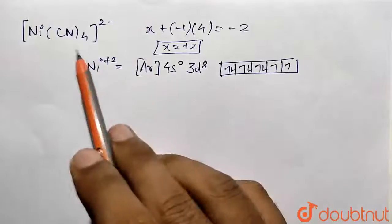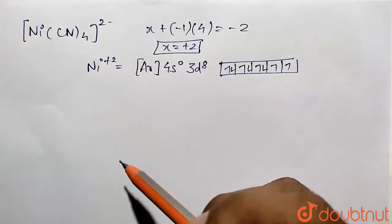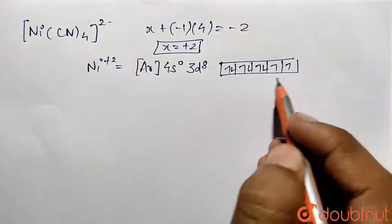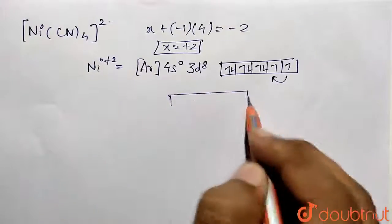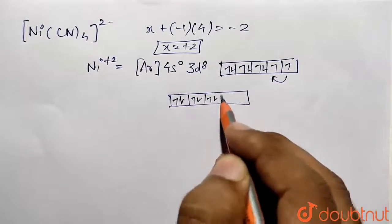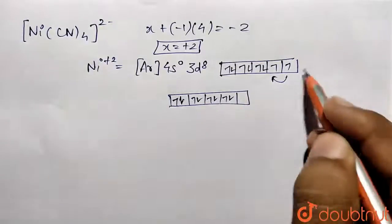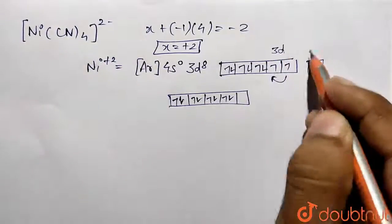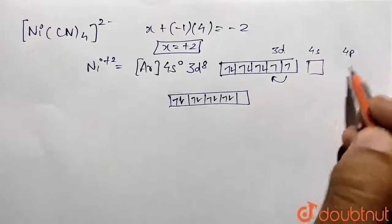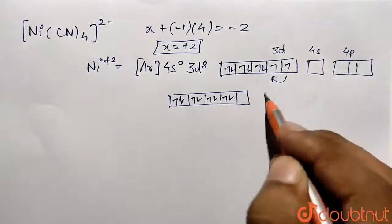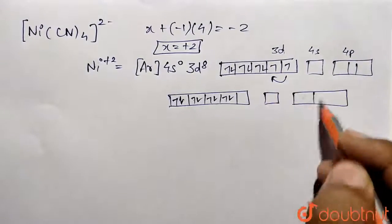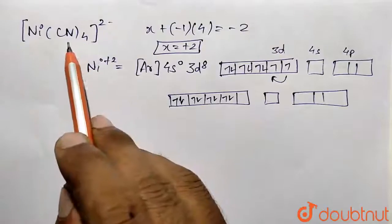You can represent like this: eight electrons in 3d. Now we have a strong field ligand again, so same as the previous one, we are going to do pairing. After the pairing, these are going to be filled like this, and we are left with 3d, this is our 4s, and 4p is already vacant.